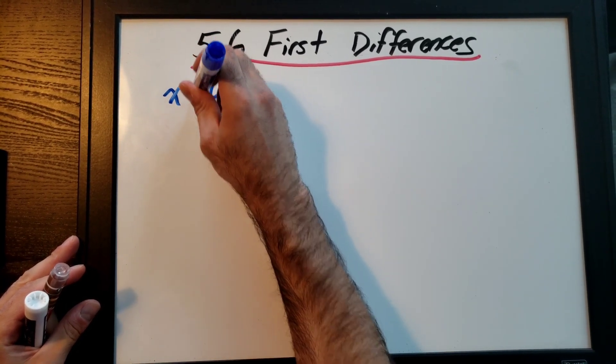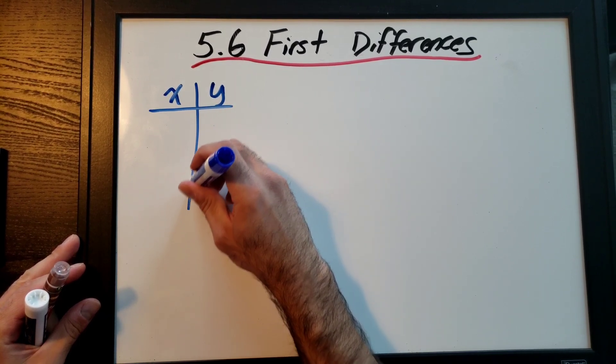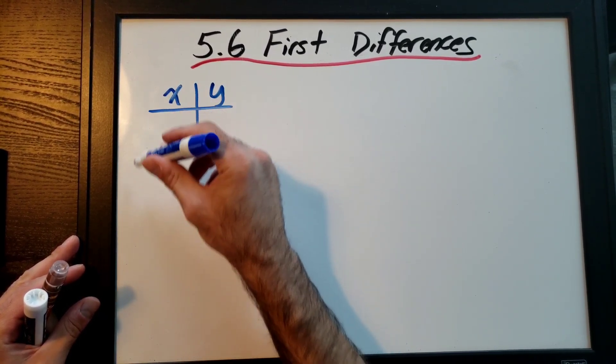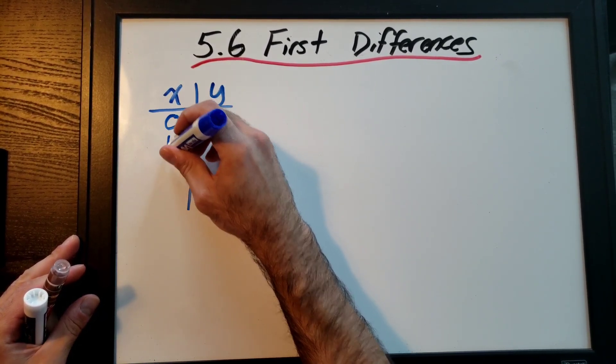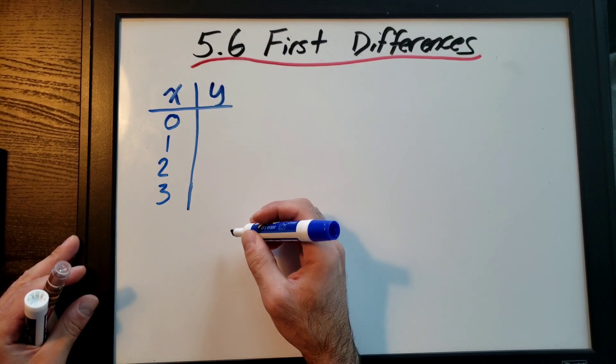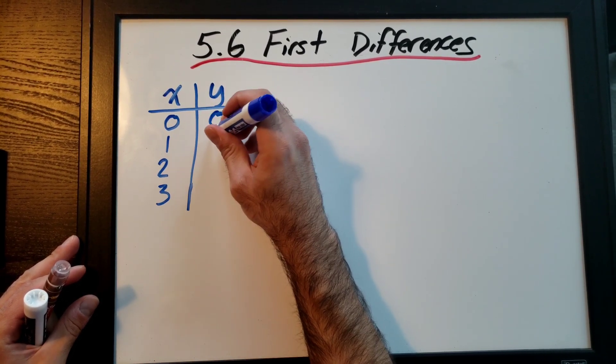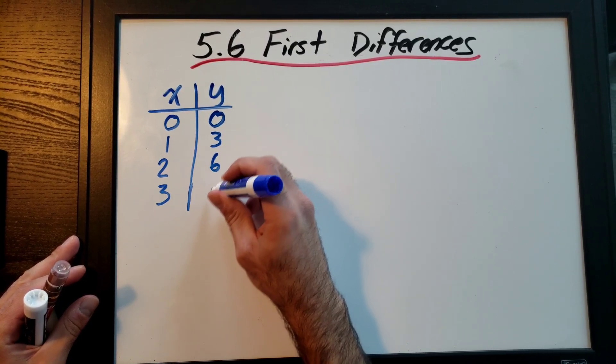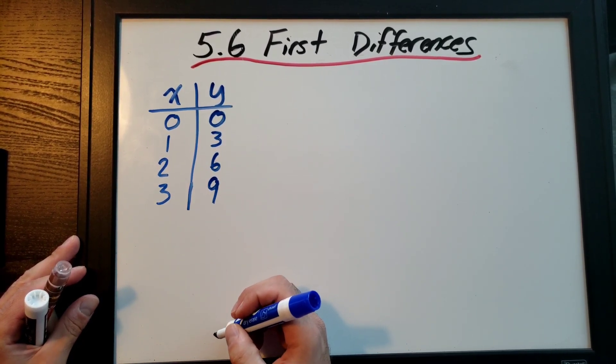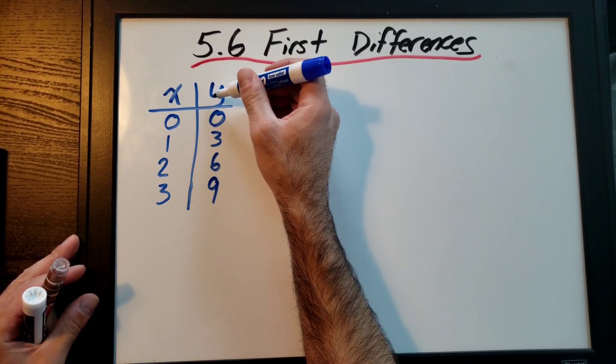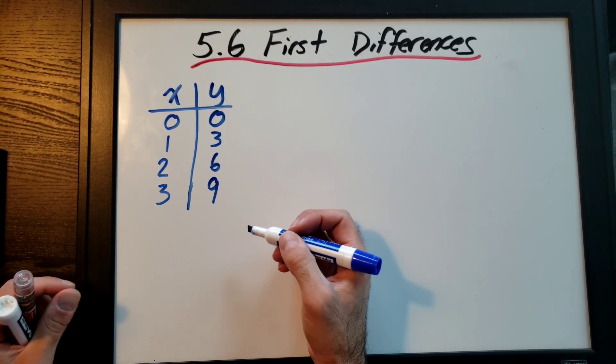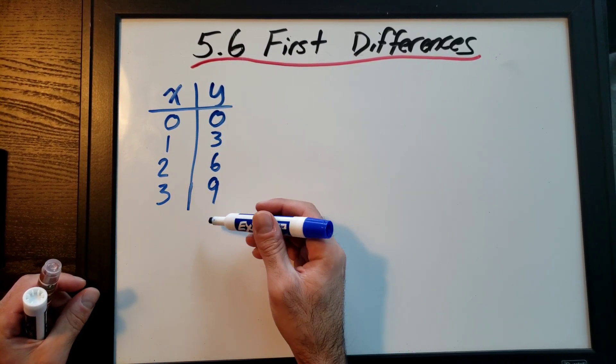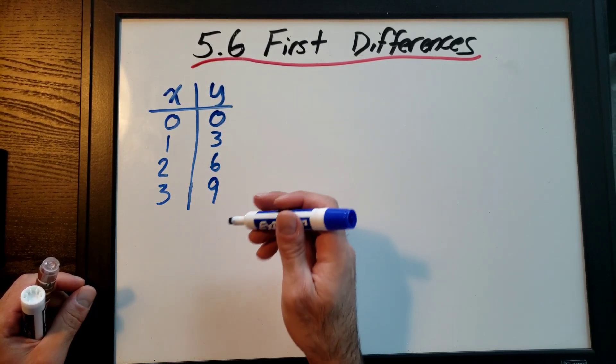For instance if I have a table of values and generally in a table of values if you're not given the X values you can make them up whatever works for you and then you can be given your Y values whatever the case may be. Or maybe you have to plug it into a formula or a scenario to figure out your Y values. Let's say we already have a table of values.